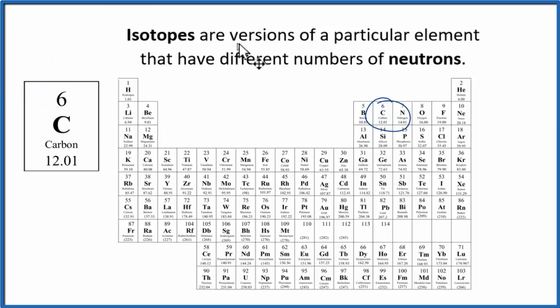We said that isotopes are different versions of an element that have different number of neutrons. So as long as there's six protons, it's carbon. But the neutrons can be different, and that'll give us isotopes. Let's take a look at that.